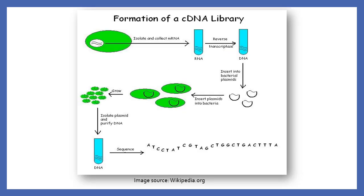After the synthesis of the double-stranded DNA, the cDNA is ligated with a suitable vector to generate clones, followed by transformation to get colonies. Post-ligation, clones are transformed in a suitable host to get colonies. A suitable host can be a bacterial strain or yeast.